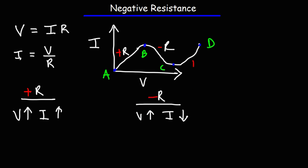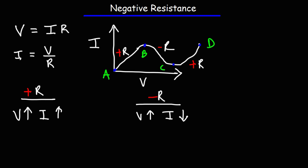Between points C and D we have a positive resistance region, because we can see a direct relationship between voltage and current — when the voltage goes up the current goes up. The reverse is also true: when the voltage goes down the current goes down. Likewise, when dealing with negative resistance, when the voltage goes down the current goes up.